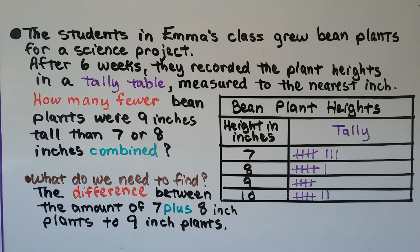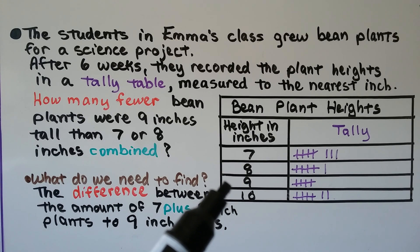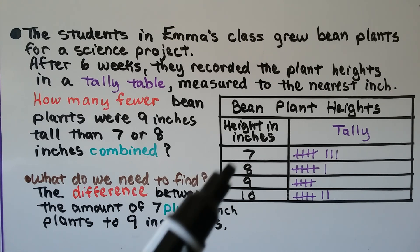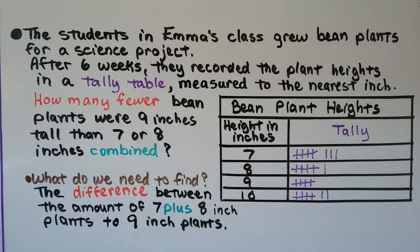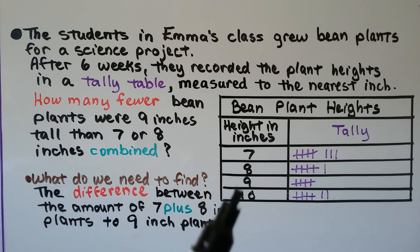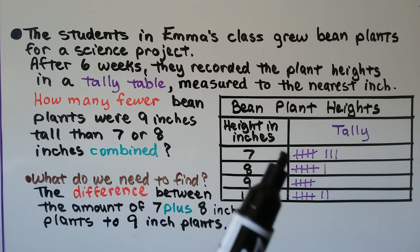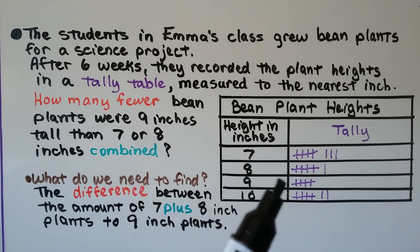The students in Emma's class grew bean plants for a science project. After six weeks, they recorded the plant heights in a tally table measured to the nearest inch. How many fewer bean plants were nine inches tall than seven or eight inches combined? Looking at the tally table, we have height in inches: seven, eight, nine, and ten. The seven-inch plants had eight, the eight-inch plants had six, the nine-inch plants had five, and the ten-inch plants had seven.